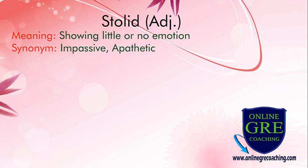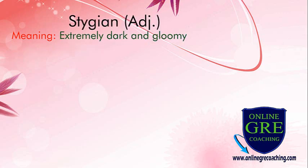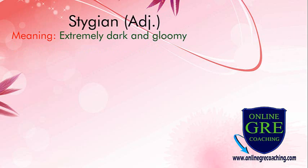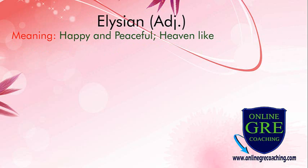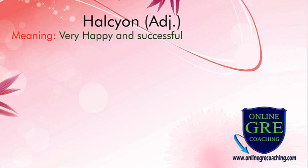Stolid: showing little or no emotion; synonyms are impassive and apathetic. Stygian: extremely dark and gloomy. Plaintive: expressing suffering or sadness; synonyms are lamentable, dolorous and regretful. Supersede: to replace someone or something. Allusion: means happy and peaceful, heaven-like. Halcyon: means very happy and successful.